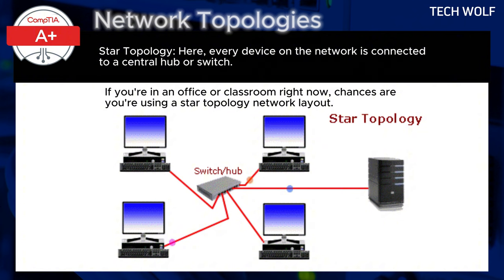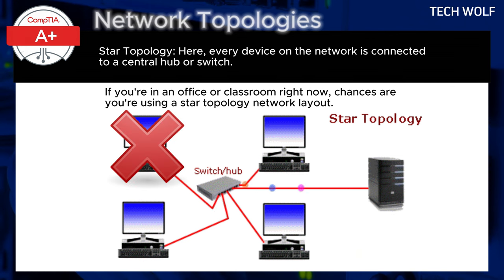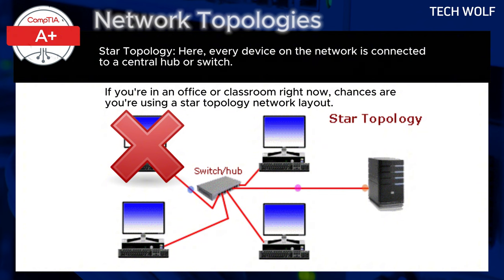The structure is like a star with the hub at the center and the devices extending outward. The main advantage of a star topology is its resilience to individual device failure. If one device goes offline, the rest of the network remains unaffected since each device has its own direct connection to the hub. Additionally, it is easy to add or remove devices without affecting the overall network.